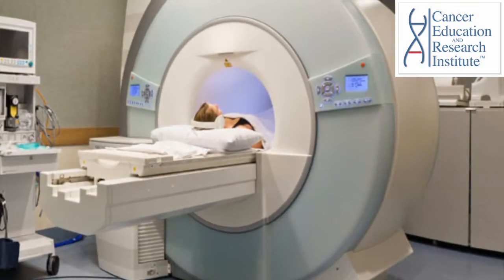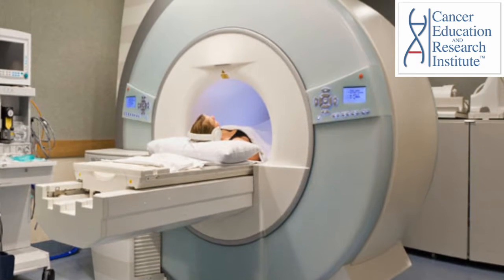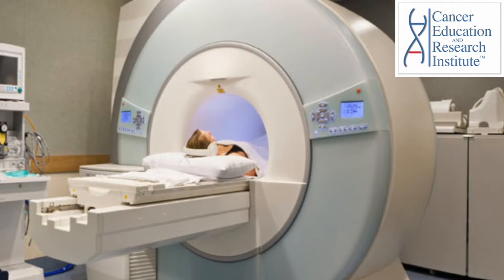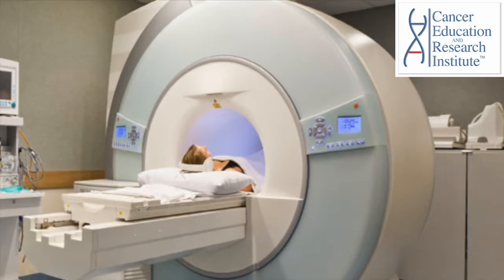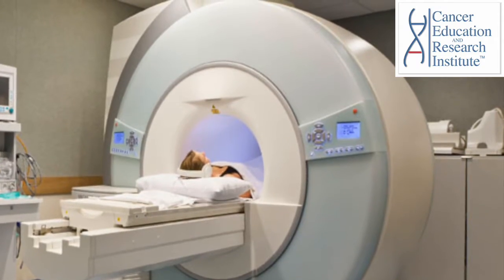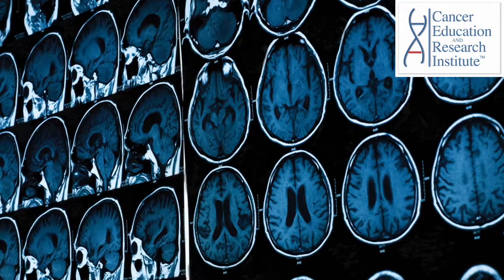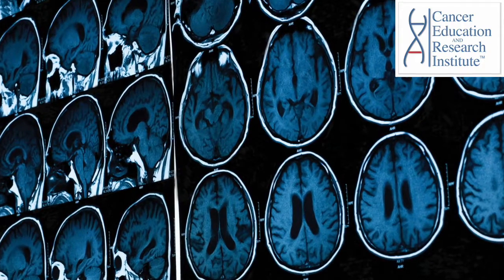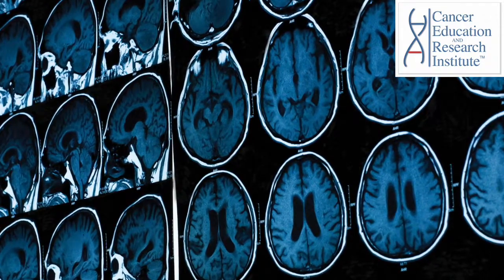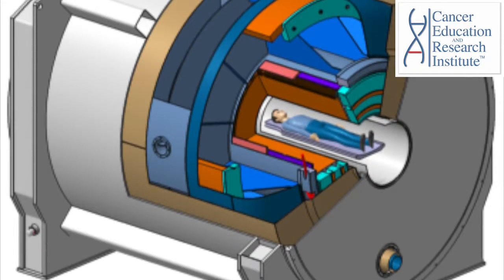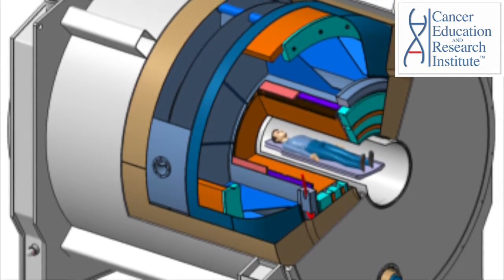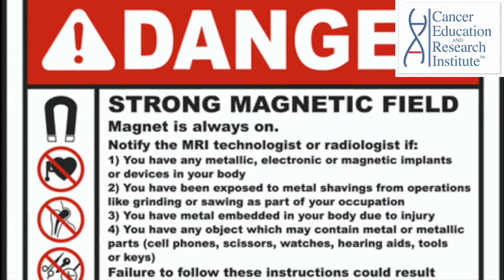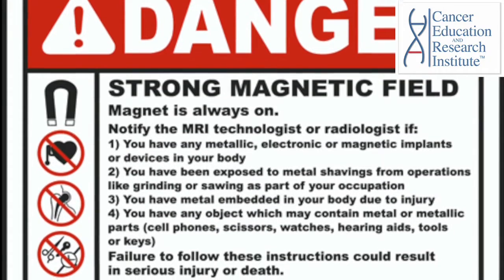Magnetic resonance imaging, MRI, is an imaging technique which is used to obtain anatomical and physiological process images of the body. It provides cross-sectional images of the examined part of the body. The MRI device consists of a very large and strong magnet which uses electromagnetic and radio waves.